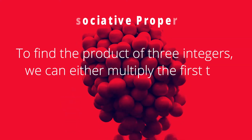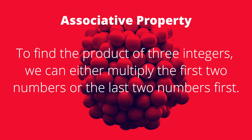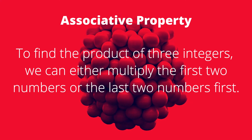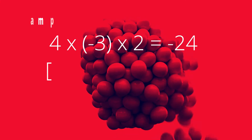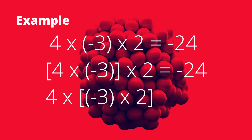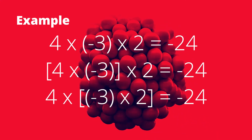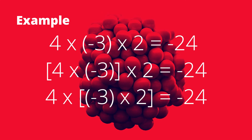To find the product of three integers, we can either multiply the first two numbers first or the last two numbers first. For example, if you have 4 times negative 3 times 2, we multiply the first two numbers: (4 times negative 3) times 2, which is equal to 4 times (negative 3 times 2), which equals negative 24.